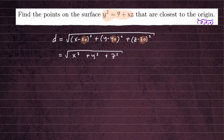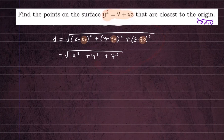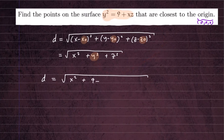Now we want to use the surface that's been given to us. We're going to plug the surface equation into our function in place of Y squared — that is the constraint we're going to use to find the maximum or minimum. By substituting that in, our D equals the square root of X squared plus Y squared, which becomes 9 plus X times Z, plus Z squared.